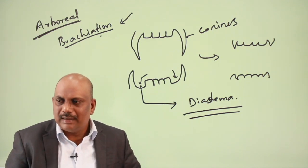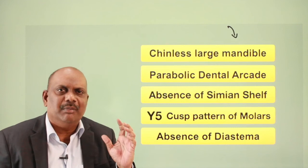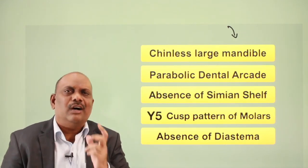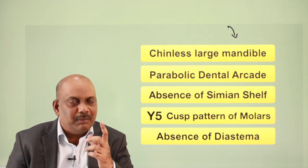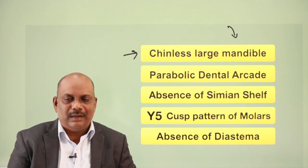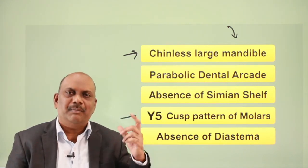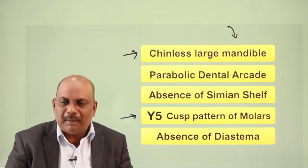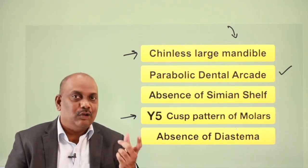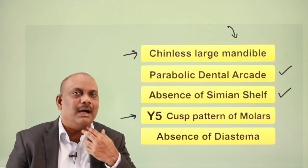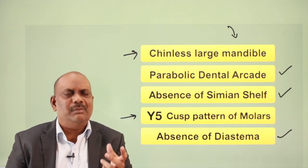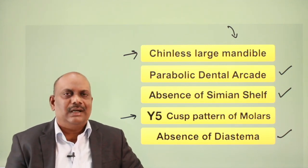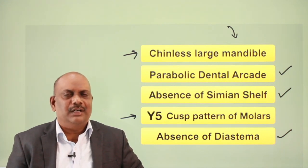These are the very important dental characteristics of Australopithecus. The large and massive mandible is because there was a need to bite and chew, while the chinless mandible is a primitive character. The Y5 cusp pattern of molars is also a primitive character. On the other hand, the parabolic shape of the dental arcade is an advanced, human-like character. The absence of simian shelf in the mandible and the absence of diastema are also advanced characters, and the absence of diastema reveals much information about Australopithecus.